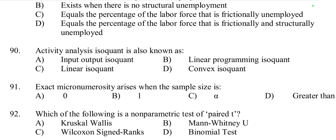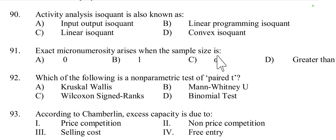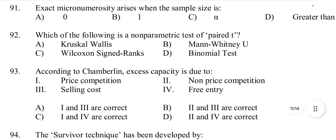Question number 90: Activity analysis isoquant is also known as linear programming isoquant, so option B is correct. Question number 91: Exact multicollinearity arises when the sample size is zero.